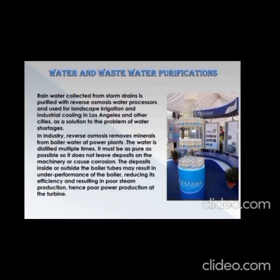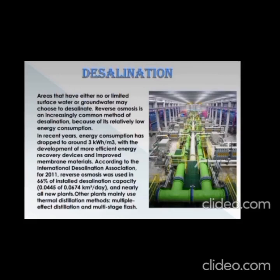After the application of fresh water, there is water and wastewater purification. Rainwater collected from storm drains is purified with reverse osmosis water processors and used for landscape irrigation and industrial cooling in Los Angeles and other cities as a solution to water shortage. In industry, reverse osmosis removes minerals from boiler water at power plants. The water is distilled multiple times and must be as pure as possible so it does not leave deposits on machinery or cause corrosion. Deposits inside or outside boiler tubes may result in underperformance, reducing efficiency and resulting in poor steam and power production at the turbine.